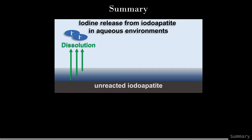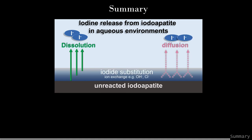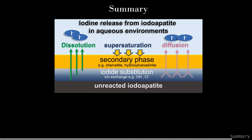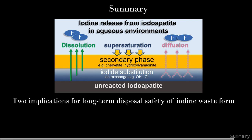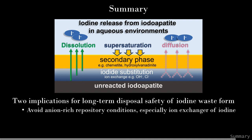In conclusion, iodine release in aqueous environments is contributed by congruent dissolution of the material matrix and diffusion by ion exchange. The release processes are susceptible to solution chemistry such as pH, ionic species, and ionic strength. Both high and low pH can accelerate iodine release. Small ions such as chloride can substitute iodine, leading to rapid ion exchange and high initial release. High ionic strength reduces the activity coefficient of dissolved species, increasing the rate of surface reactions. Secondary phases may occur—chervetite in acid and hydroxylvanadite in basic solutions. For disposal safety: avoid ion-rich conditions especially those with ions that can exchange with iodide, and create and maintain neutral pH in a repository environment to minimize dissolution rates.